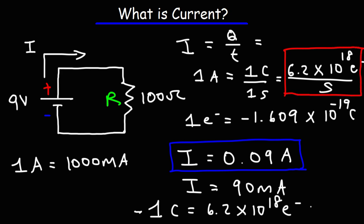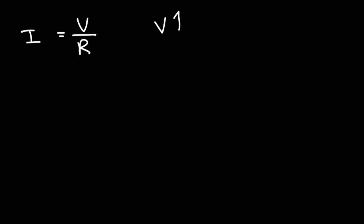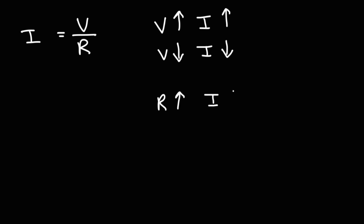You can control the amount of electric current flowing in a circuit using a current-limiting resistor. According to Ohm's law, current equals voltage divided by resistance. As you increase the voltage, the current increases — they are directly related. If you decrease the voltage, the current decreases. If you increase the resistance, you impede the flow of electric current and the current decreases — these two are inversely related since R is in the denominator. If you decrease the resistance, the current will increase.